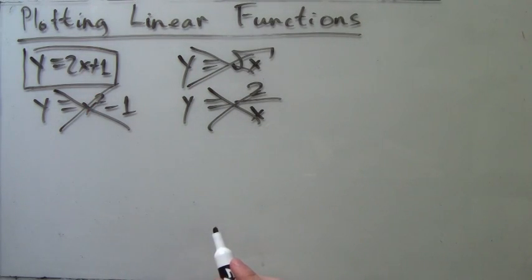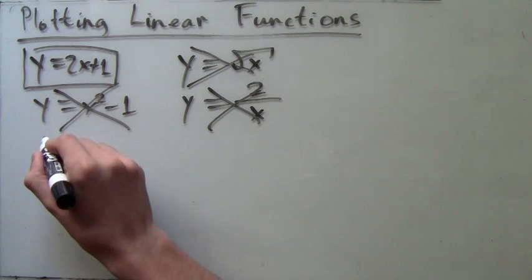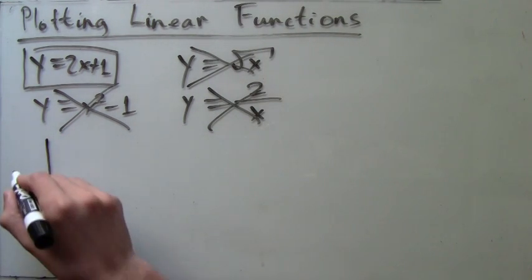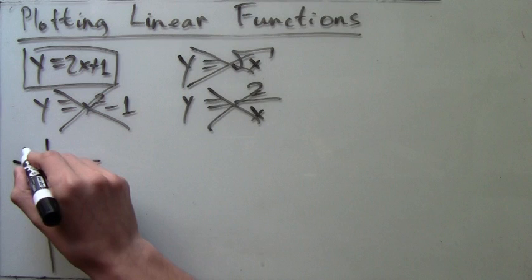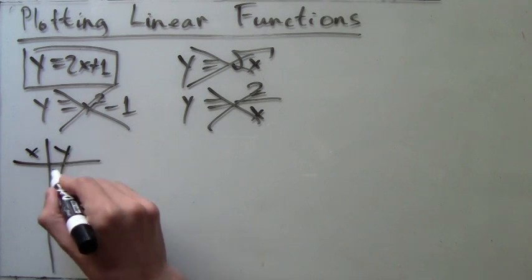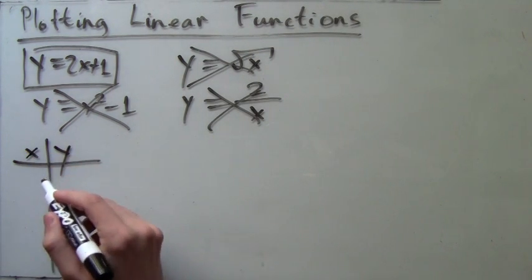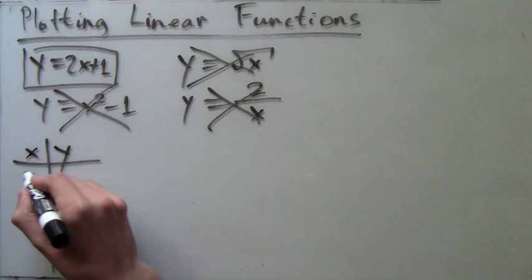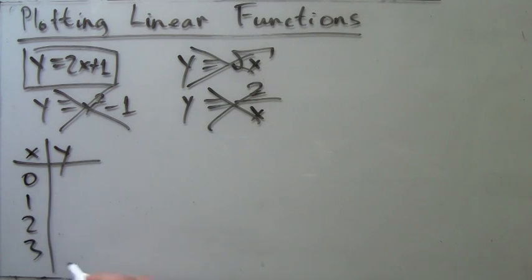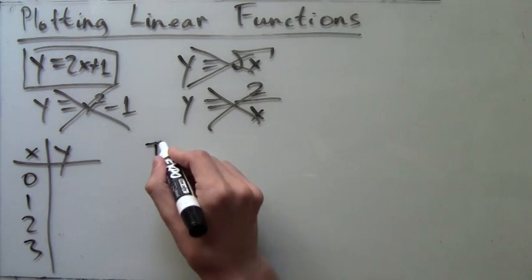Now we are ready to plot our linear function. We'll take y=2x+1. First, we will make a table of values for x and their corresponding values of y. We will take x equals 0, 1, 2, and 3.